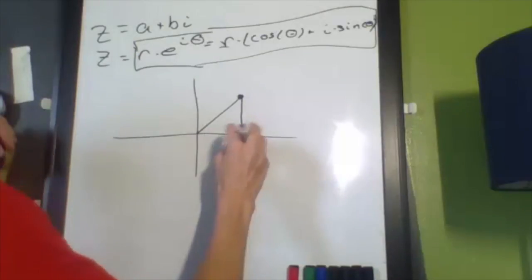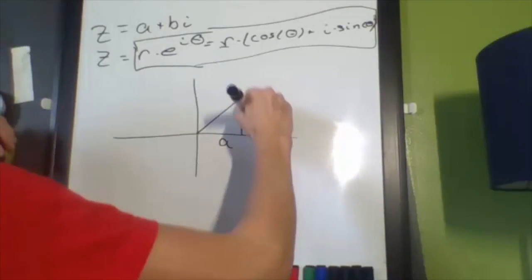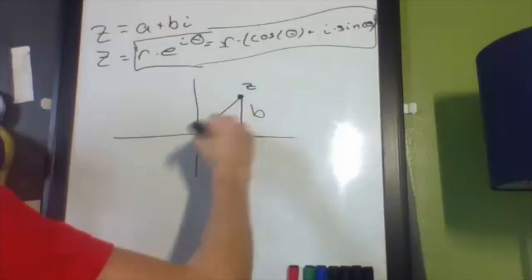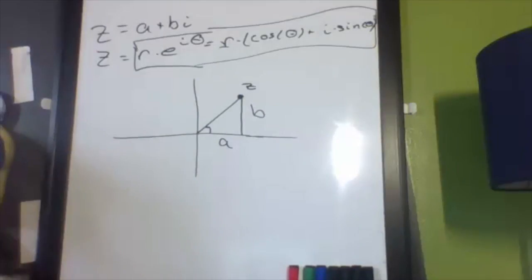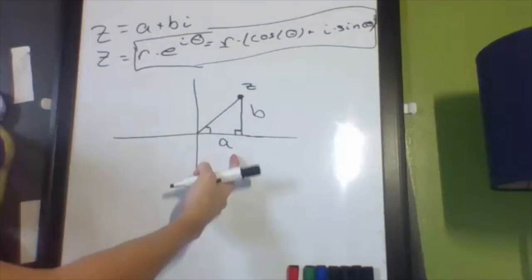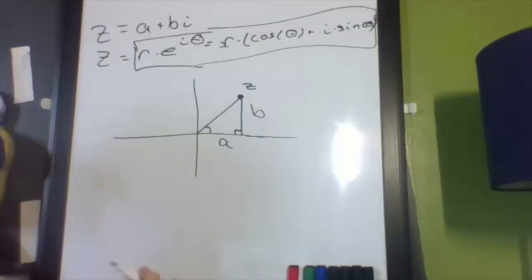So, a plus bi, right? And then convert it into this polar form. Okay, first, what you need to realize is that this is a right triangle that has legs a and b. And if you have two sides of a right angle triangle, you know everything else about it.